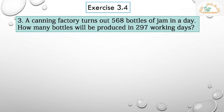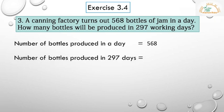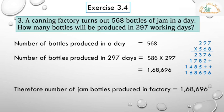Here is the solution. First statement: number of bottles produced in a day is equal to 568. After multiplying we get 1,68,696. Therefore, the number of jam bottles produced in the factory is equal to 1,68,696.